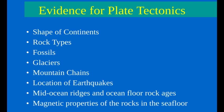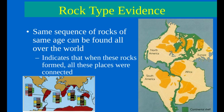We'll go through each piece of evidence and give you some details to write in your notes. One of the sources of evidence is found in geology, in the study of rocks. We see similar rock types on the edges of continents that were once next to each other. The same sequence of rocks of the same age can be found in locations that are no longer connected.